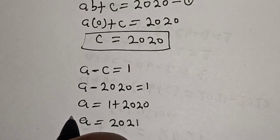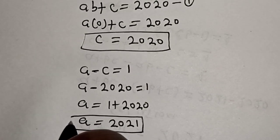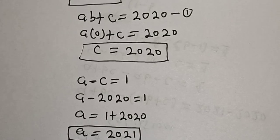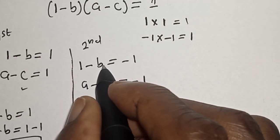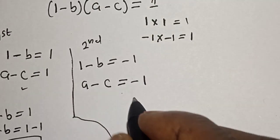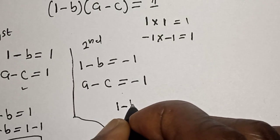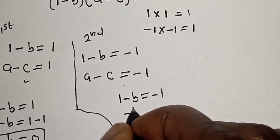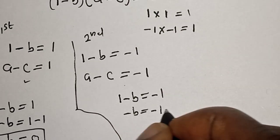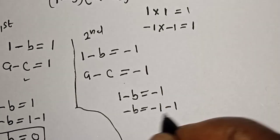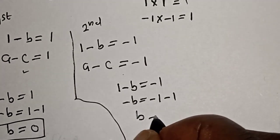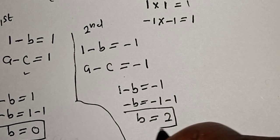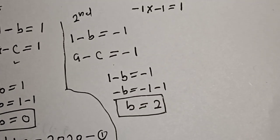For the second case, 1 − B = −1, so −B = −1 − 1, then −B = −2, therefore B = 2. We have gotten the value of B, which is equal to 2.